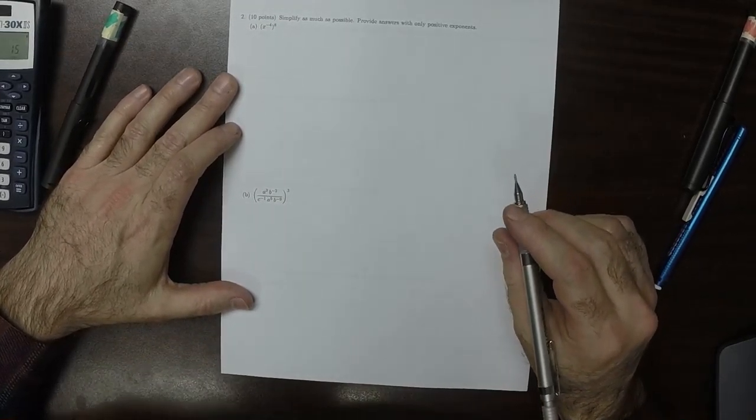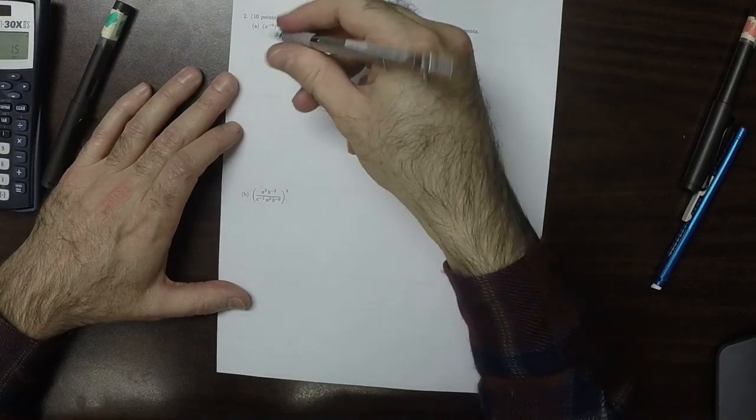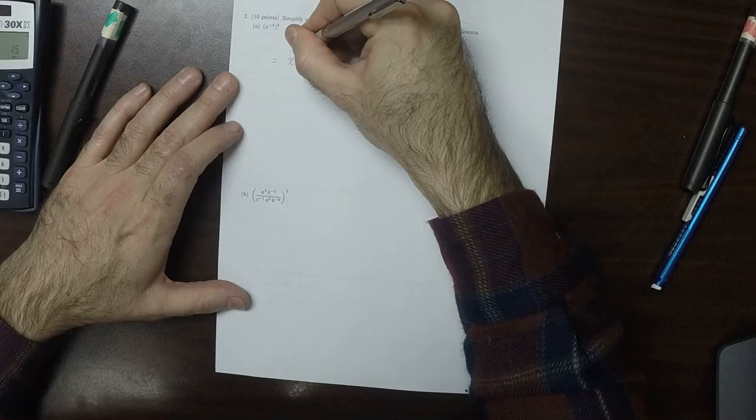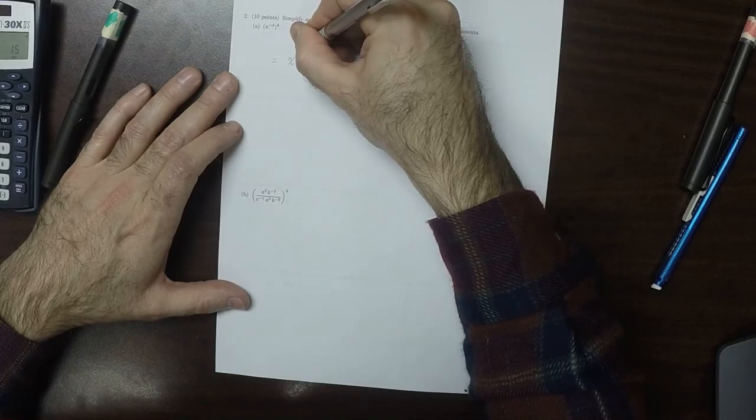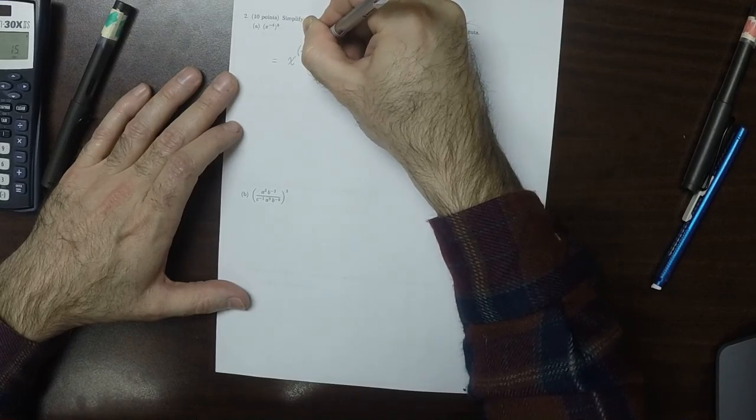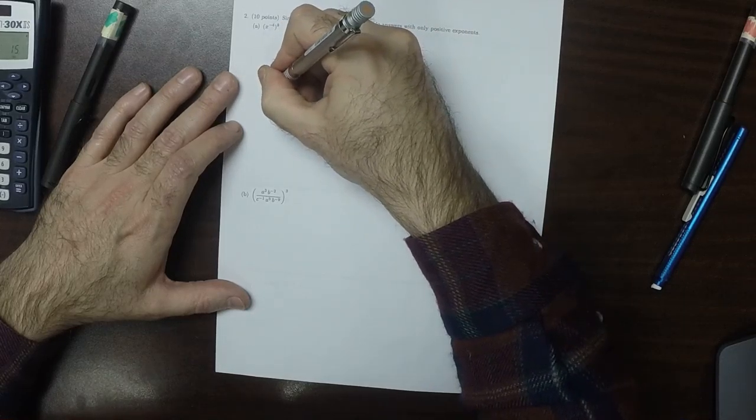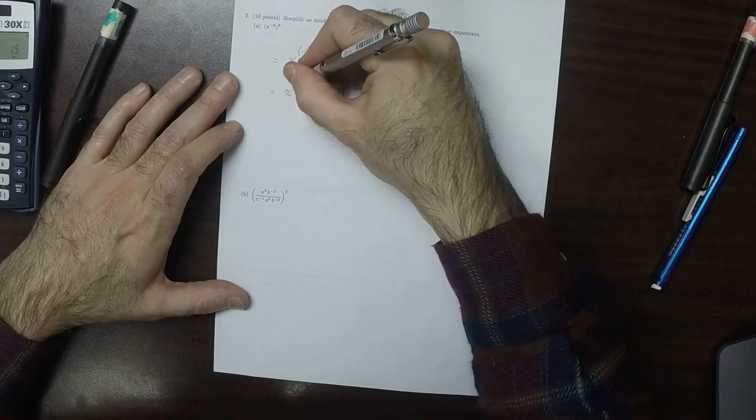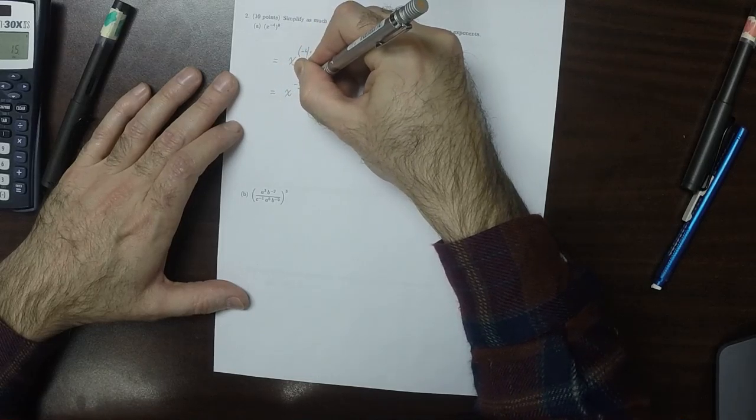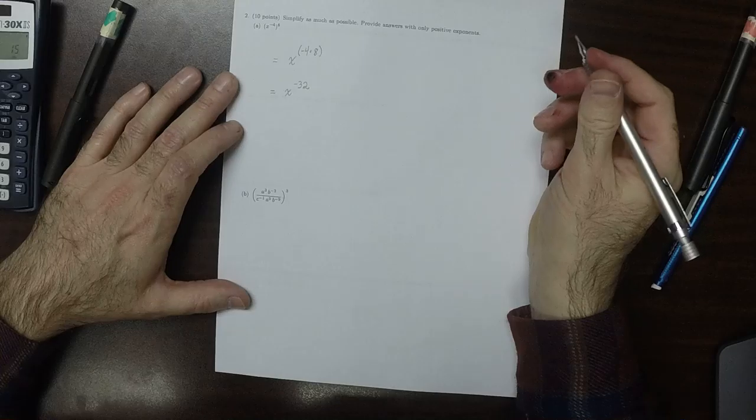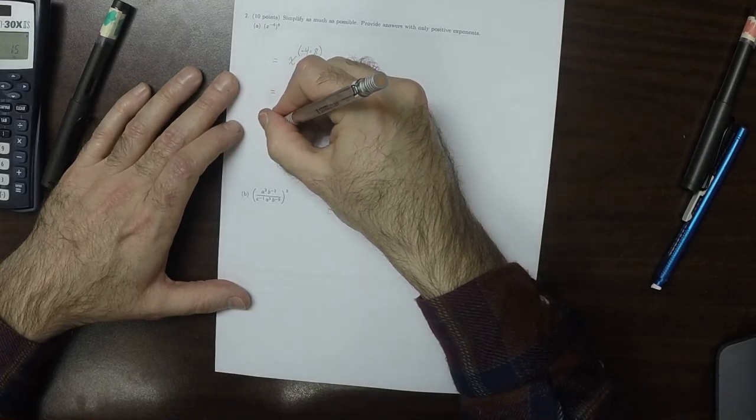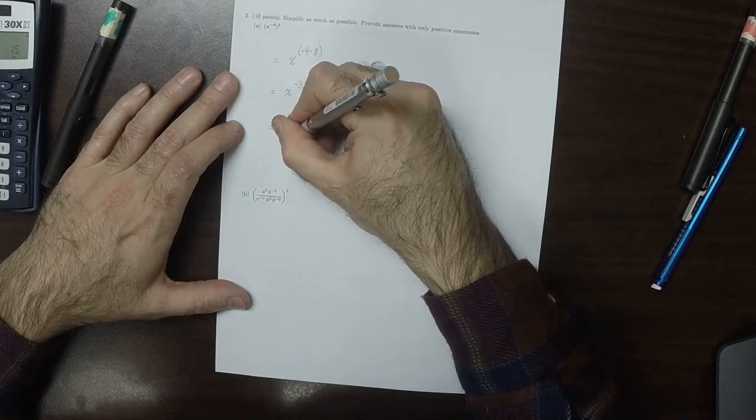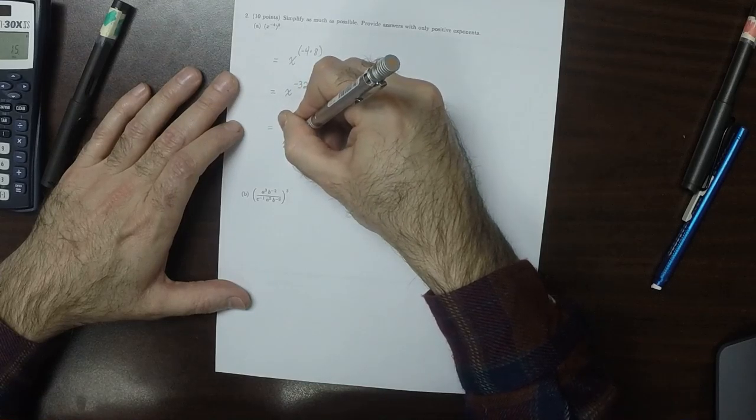Simplify as much as possible. Part A, that's iterated exponents. So that's x with exponent negative 4 multiplied by 8. So that's x to negative 32. And then it says with only positive exponents, so 1 over x to 32.